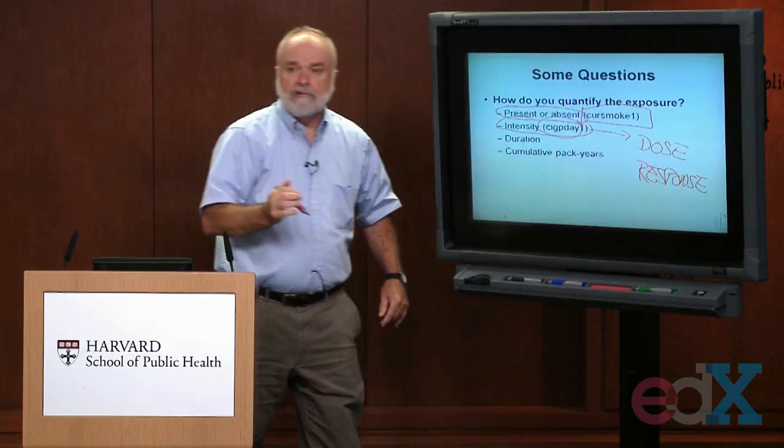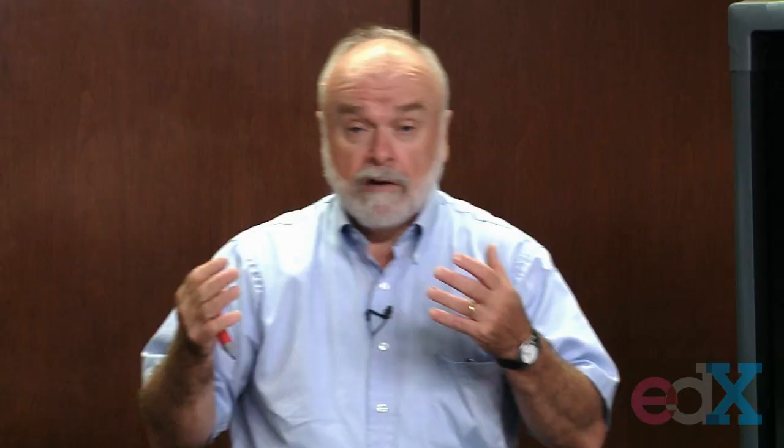Let's suppose it's not whether you smoke or don't smoke that really determines your risk of developing heart disease — it's how much you smoke. Three-pack-a-day smokers have much higher risks than two-pack-a-day smokers, who have higher risks than one-pack-a-day smokers, who might have higher risks than non-smokers. If you expect increasing risk with increasing amounts of smoking, then instead of using the dichotomous cursmoke1, we'd be better off using the more continuous variable, number of cigarettes per day.